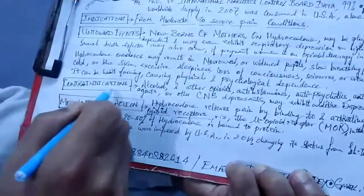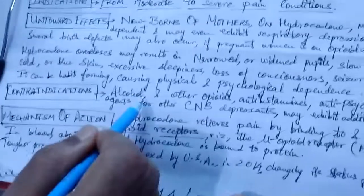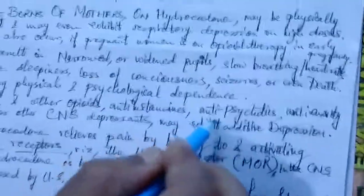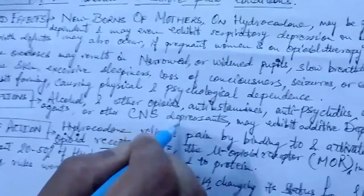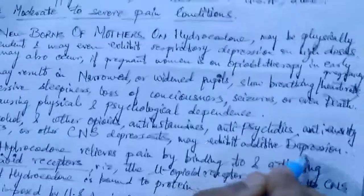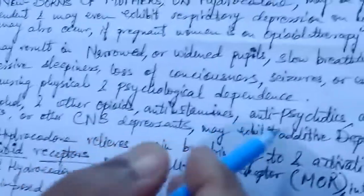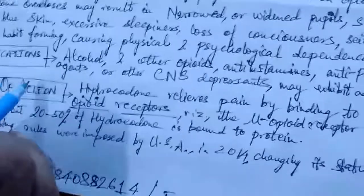Regarding contraindications, people taking alcohol, other opioids, antihistamines (anti-allergics), antipsychotics, anti-anxiety agents, or other CNS central nervous system depressants may exhibit additive depression. These drugs — including alcohol and all the categories enumerated — are contraindicated in hydrocodone therapy.